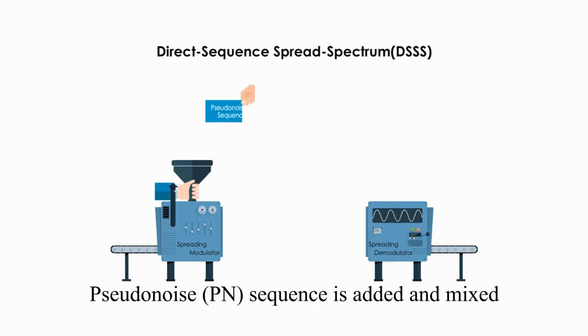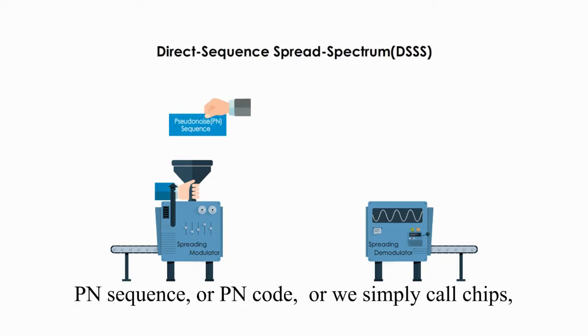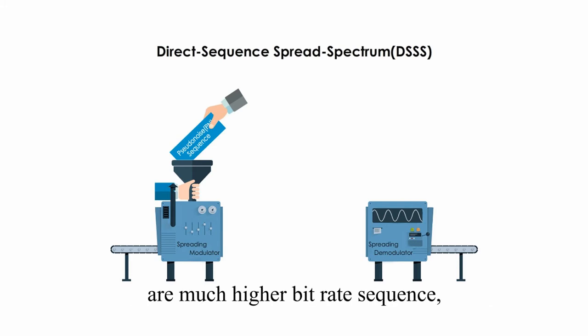Pseudo noise or PN sequence is added and mixed in the spreading modulator. PN sequence or PN code, or we simply call chips, are much higher bit rate sequence, a series of zeros and ones.